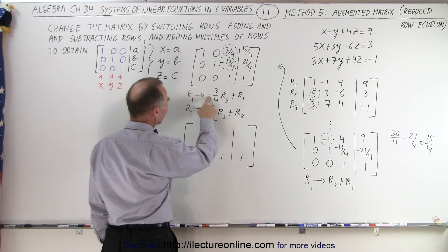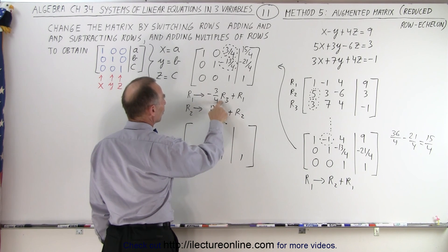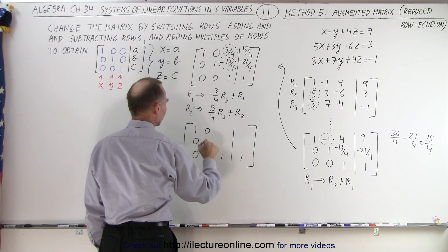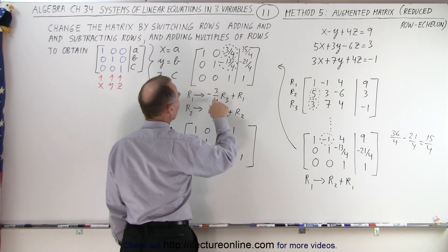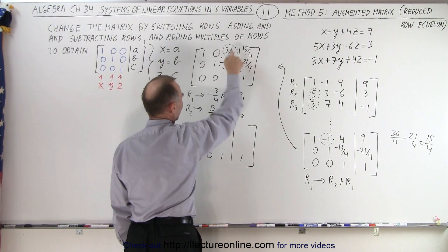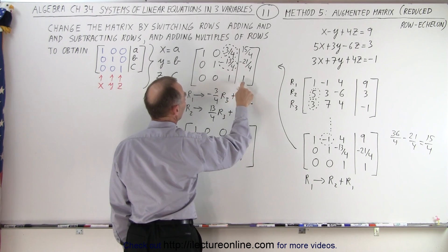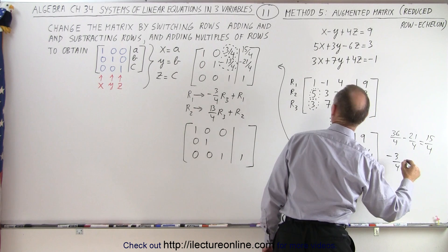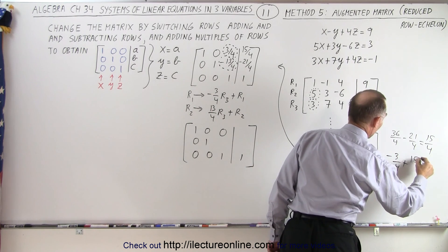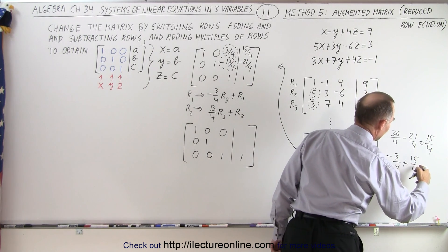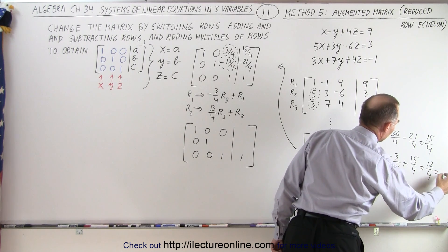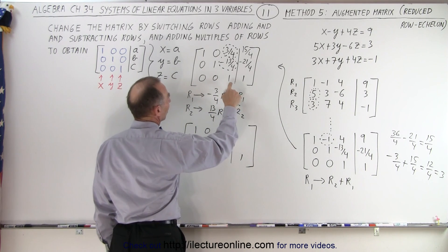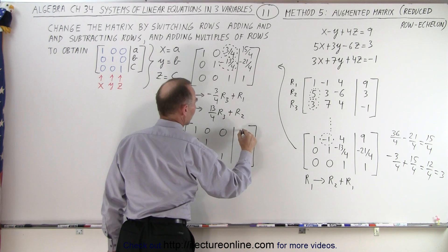So negative three quarters times row three. Well, first of all, these are not going to change anymore. So I can go ahead and plug these in like this, but I'm worried about those two right there. So negative three quarters times that added to this becomes a zero. Negative three quarters times this added to 15 over four. So that's negative three quarters plus 15 over four. That's minus three plus 15. That would be equal to 12 over four, which is equal to three. So when I take negative three quarters of this number, add it to this number, I end up with a three.